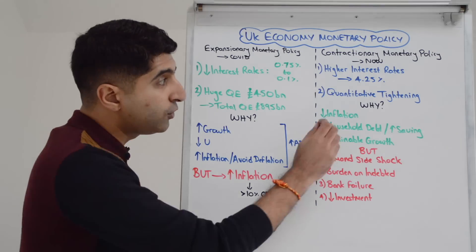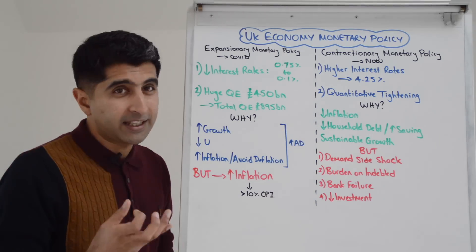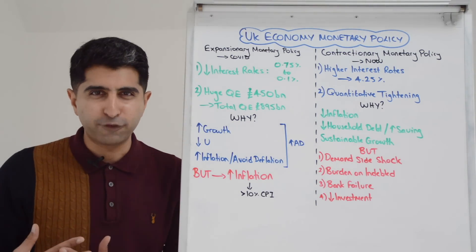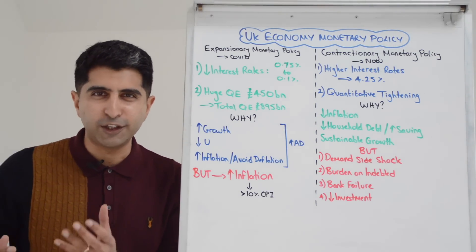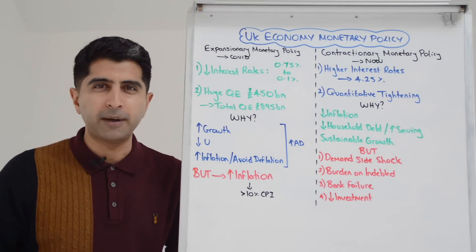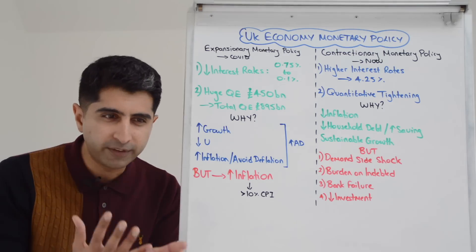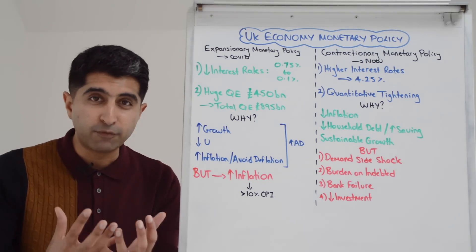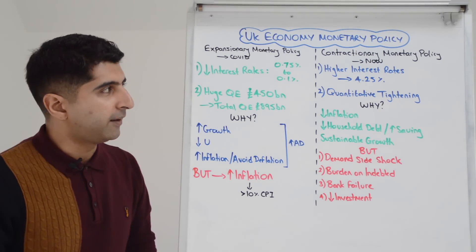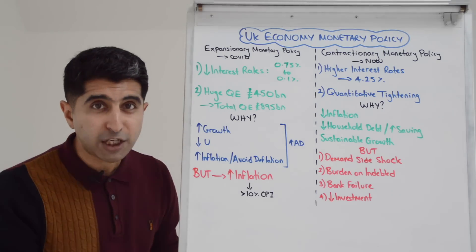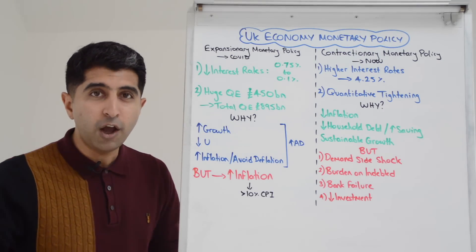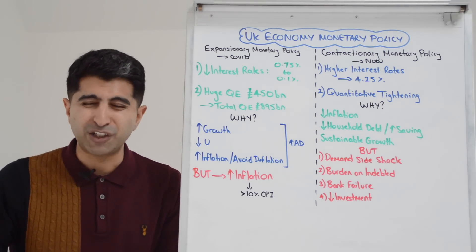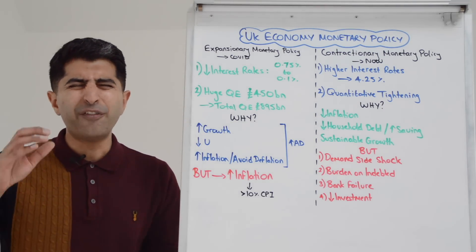But also, the Bank of England are using quantitative tightening. What is that? It's basically the reverse of quantitative easing. QE is an increase in a country's money supply; quantitative tightening is the reversal of that process to try and reduce the money supply. Both policies are contractionary in nature, with the core goal of reducing inflation.